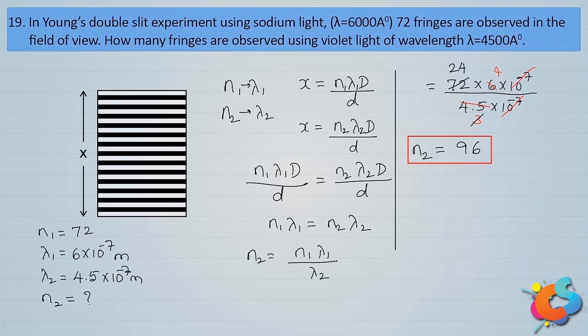This result makes sense: yellow light has greater wavelength, so it produces broader fringes, whereas violet produces narrower fringes. Within the given field of view, yellow produces broader fringes and violet produces narrower fringes. Therefore, you can accommodate more narrower violet fringes than broader yellow fringes, so N₂ = 96 is greater than N₁ = 72.